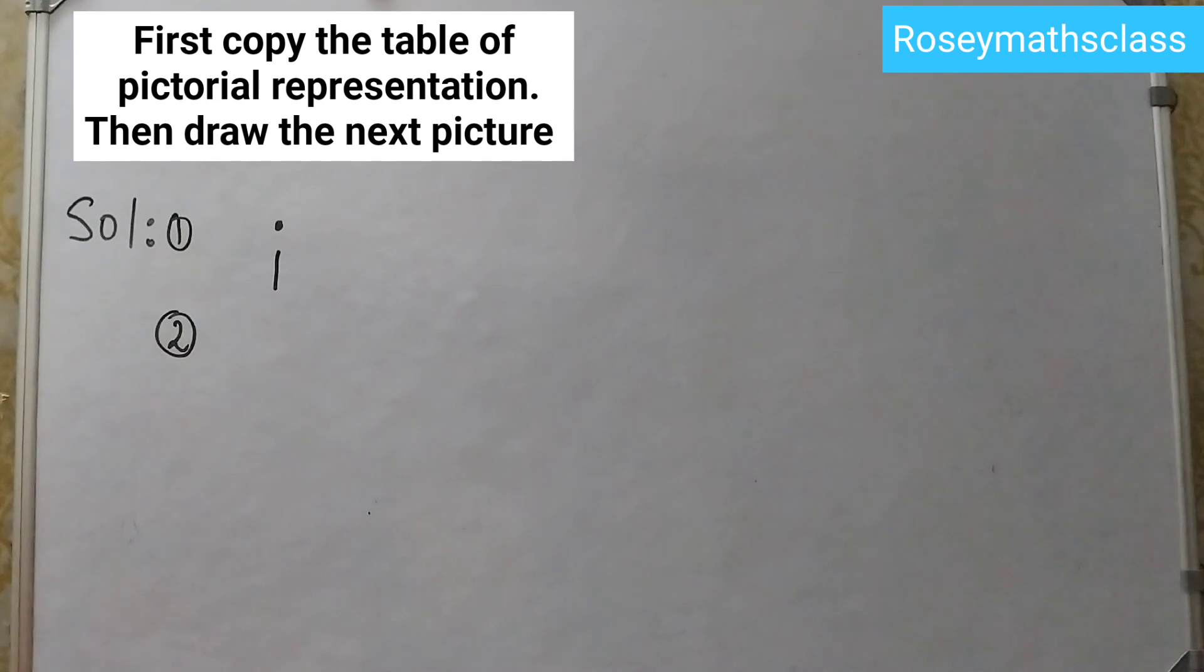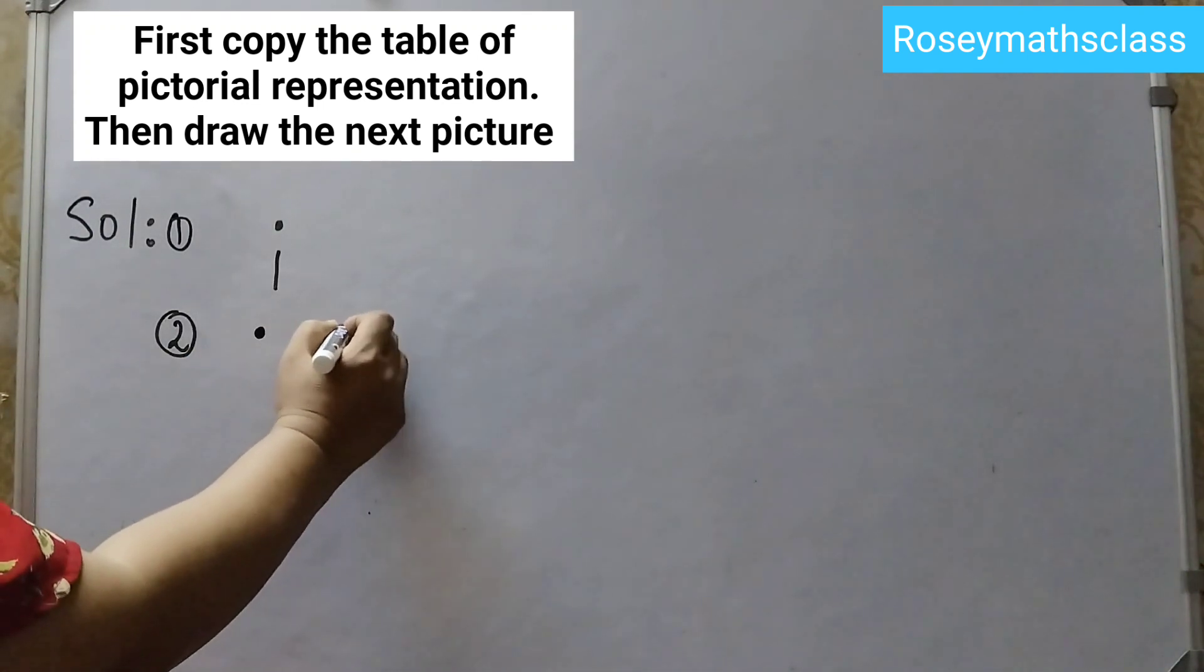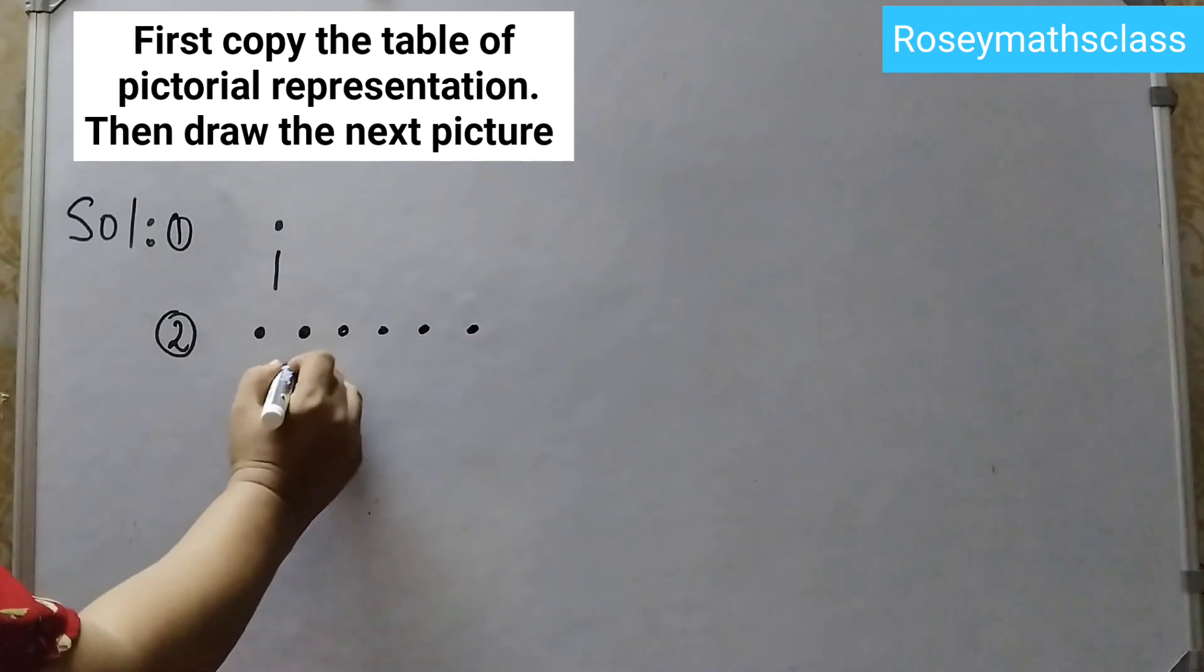The second one is counting numbers. It is given till 5, counting numbers are like 1, 2, 3, 4, 5, so the next one will be 6. So draw 6 dots: 1, 2, 3, 4, 5, 6 and just write 6.